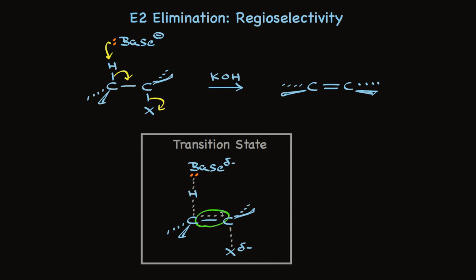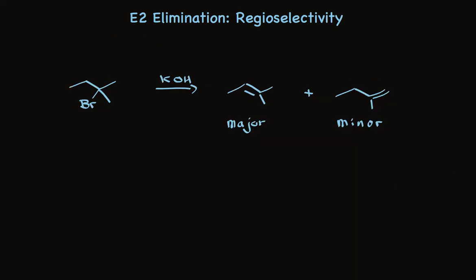First, take a look at the products of a specific reaction. When this tertiary alkyl bromide is treated with base, two products are possible. The product on the left is the major product, while there's a minor amount of the product on the right.